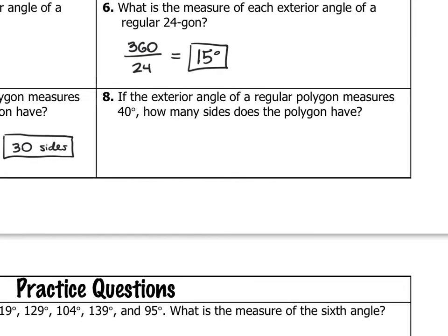The same for number eight: if the exterior angle of a regular polygon measures 40 degrees, how many sides does it have? 360 divided by x equals 40, so 40 times x equals 360, and x is 9. That would be a nonagon — nine sides.